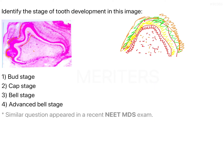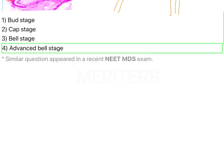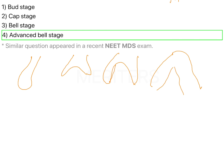Coming to the question, they have asked you to identify the stage of tooth development, and the answer is the advanced bell stage. This is because you can see that the structure has grown considerably. To differentiate the stages: this is the bud, this is the cap, this is the early bell, and this is the advanced bell. That is how you differentiate between the four stages of tooth development.